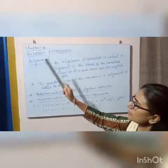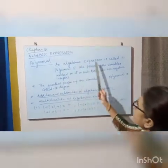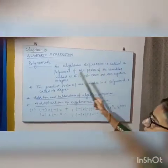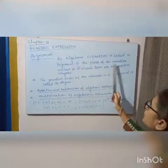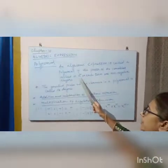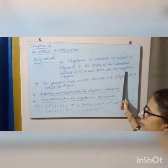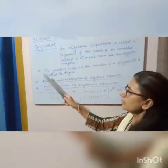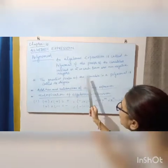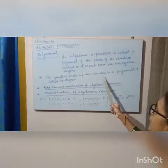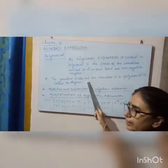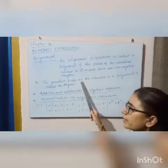Polynomials. That algebraic expression is called a polynomial if the power of the variables involved in each term are non-negative integers. The greatest power of the variable in a polynomial is called its degree.